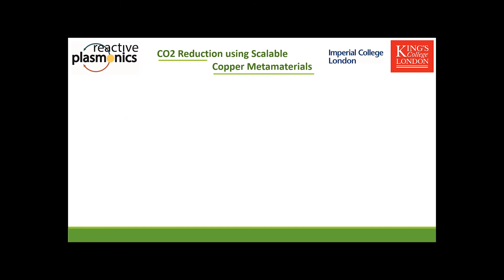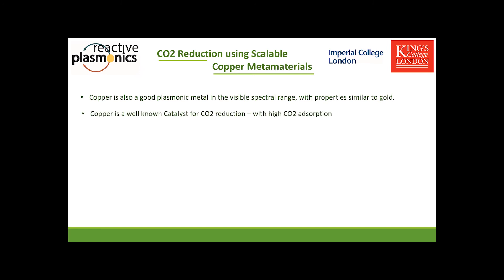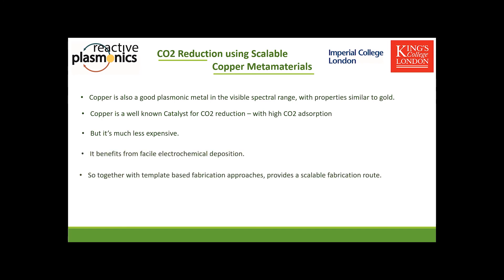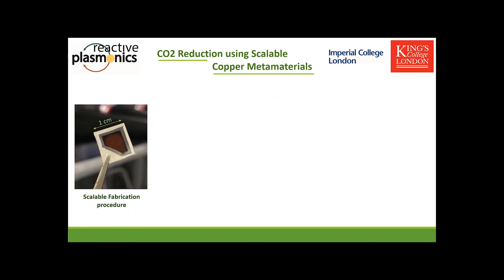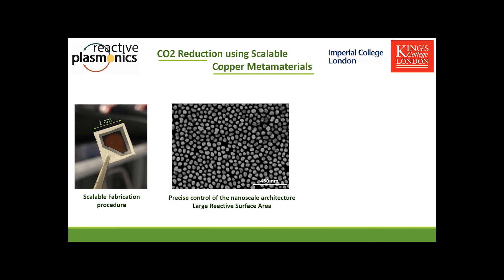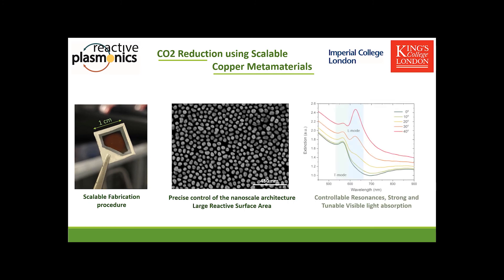The final example is the reduction of carbon dioxide using scalable copper metamaterials. Copper is a good plasmonic metal in the visible spectral range with similar properties to gold. It is also a well-known catalyst for CO2 reduction, exhibiting high CO2 adsorption. Being much less expensive than traditional plasmonic metals, it benefits from facile electrochemical deposition, making it fully compatible with template-based self-assembled fabrication approaches. A typical laboratory sample is already one centimeter by one centimeter, with precise control of nanoscale architecture and a large reactive surface area.